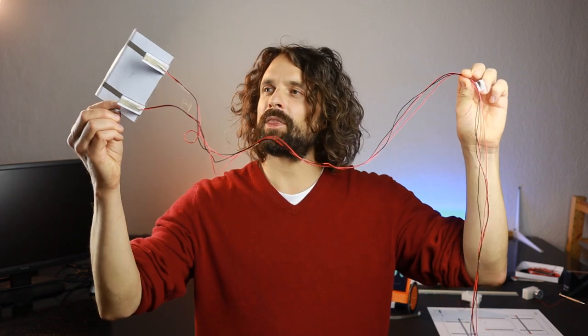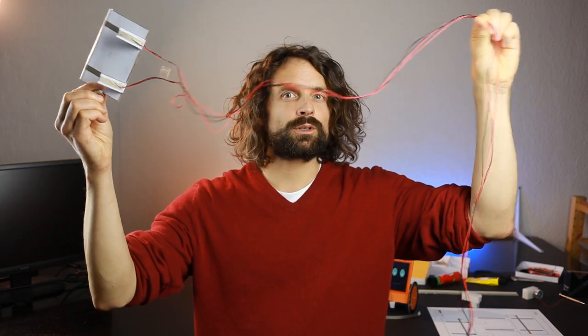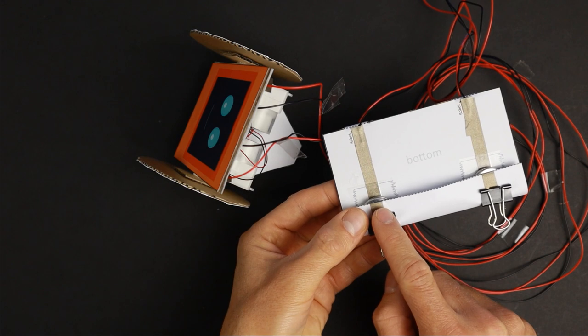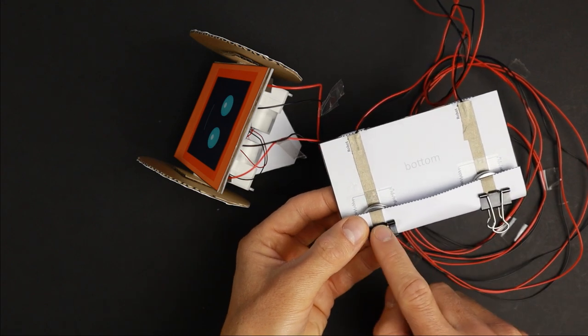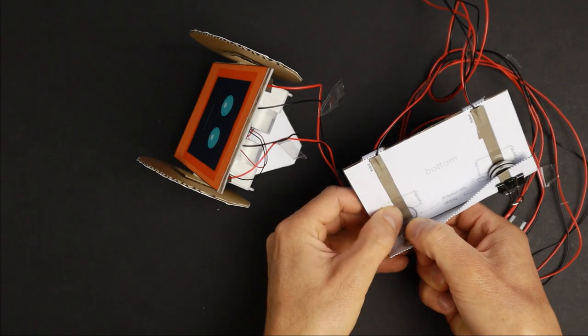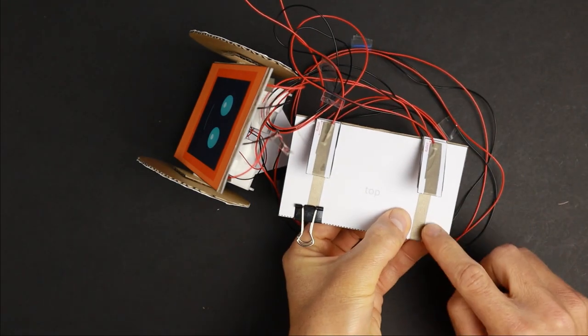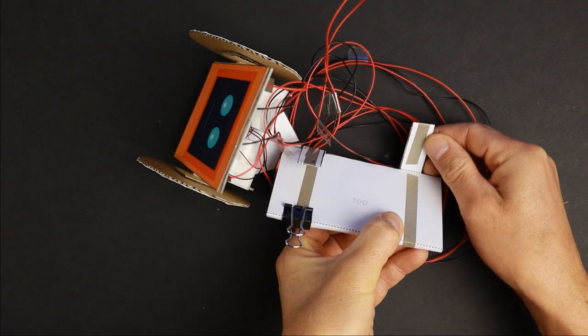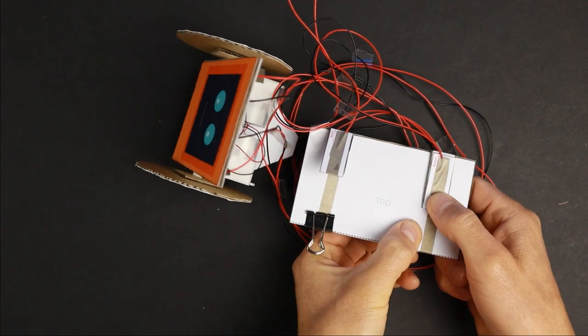So now let's get to the remote control. To keep things simple, it is a wired remote control. The controls are really simple. These two battery holders connect the plus poles to the top side and the minus poles to the bottom side. The top side has a small gap in its tracks and these fold over switches bridge that gap if you press them.